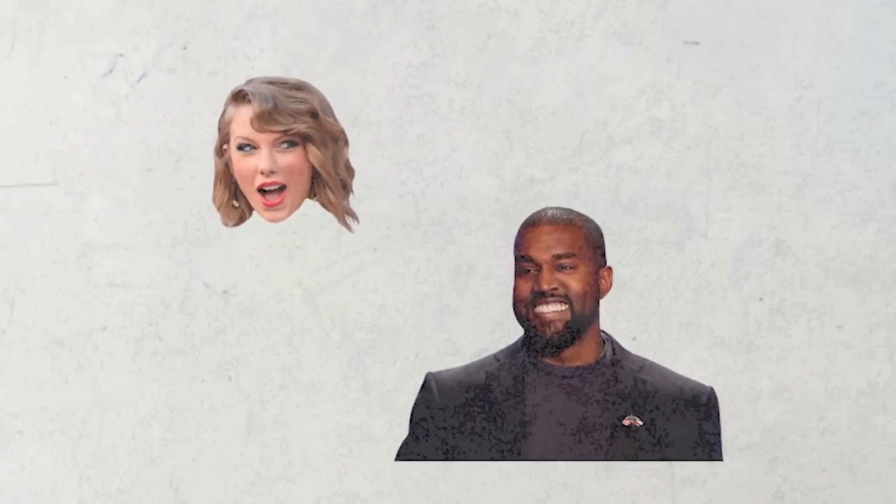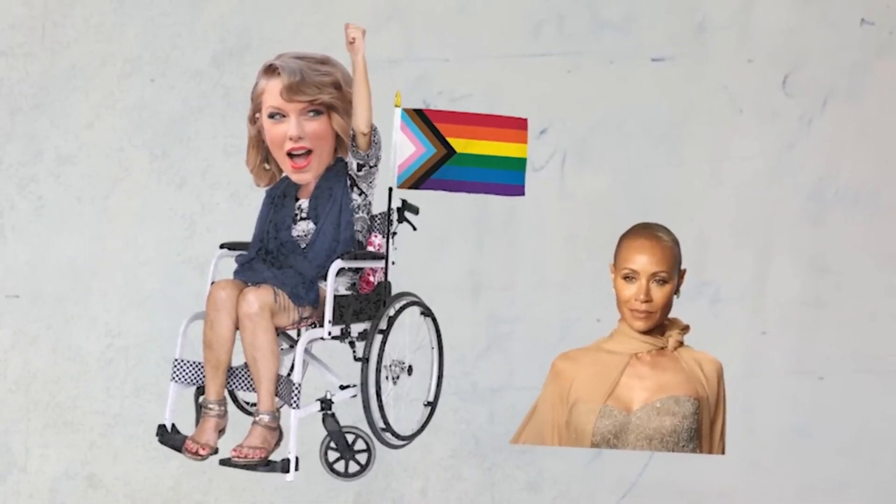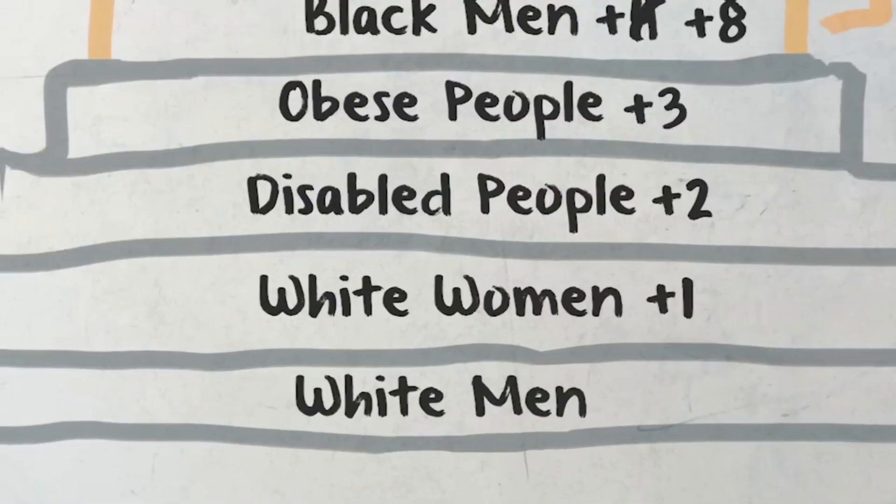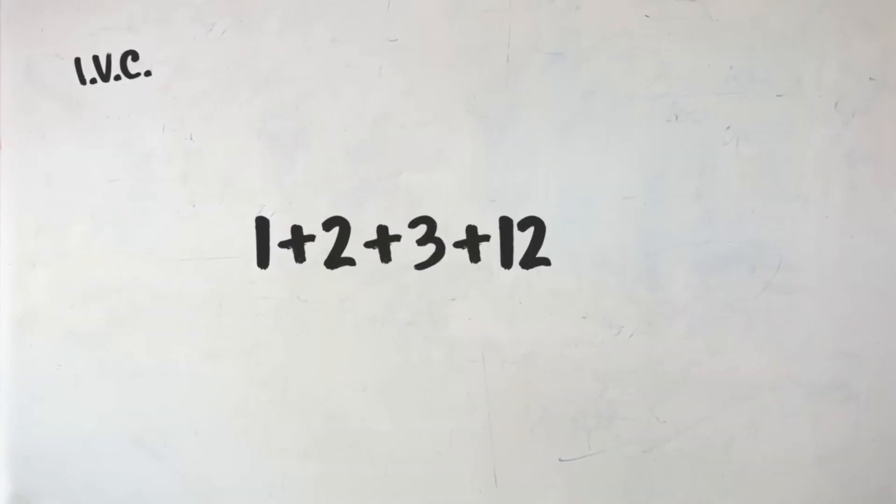Here's where things get tricky: what about crossover in groups? A fat black woman — where does she rank? How do we make sense of a gay, black, fat, deaf man in a wheelchair? Can a white woman leapfrog over black men and women by belonging to other categories? Following the intersectional victim calculus, IVC, all you do is add the total points of every group a person belongs to. A white woman who is also disabled, fat, and bisexual has one plus two plus three plus twelve, totaling eighteen victim points — comfortably above a normal non-gay, non-fat, non-disabled black man or woman.